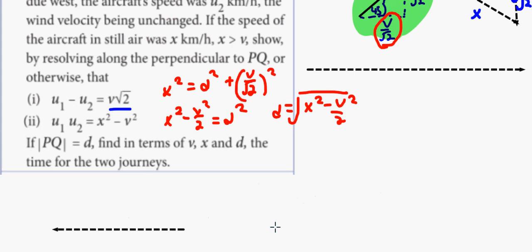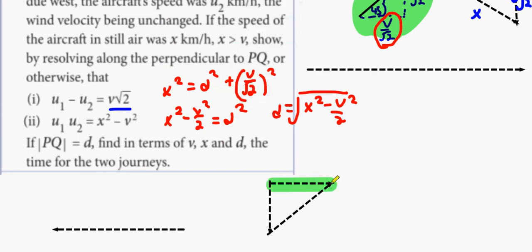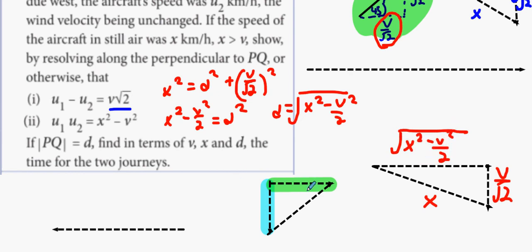So for those of you that came in late, essentially what we did was we broke up the wind into J components and I components. Then what we realized is that we couldn't go straight across unless we angled X down. When we angled X down, X had to be angled down with V over root 2. This made the adjacent side square root of X squared minus V squared over 2. That combines with the V over root 2 to give you your U1 value.